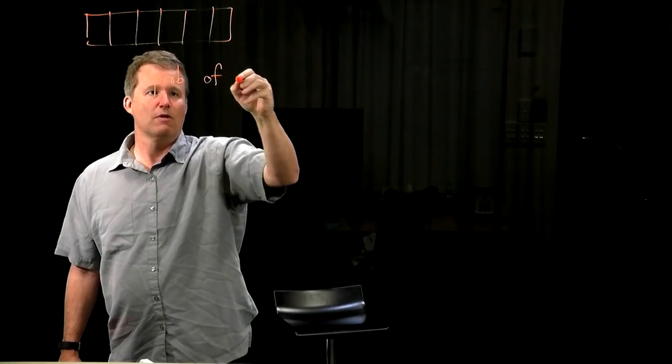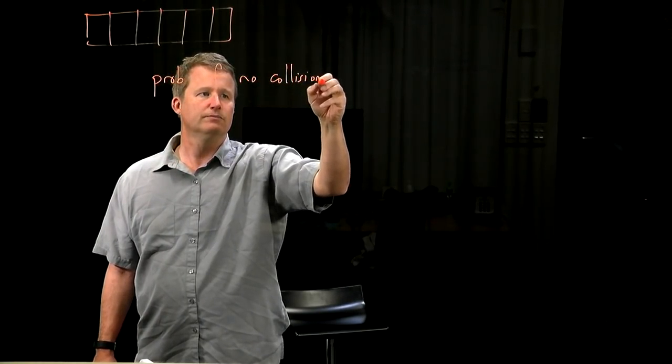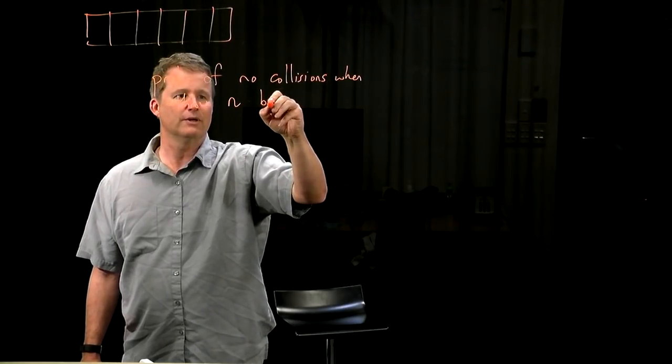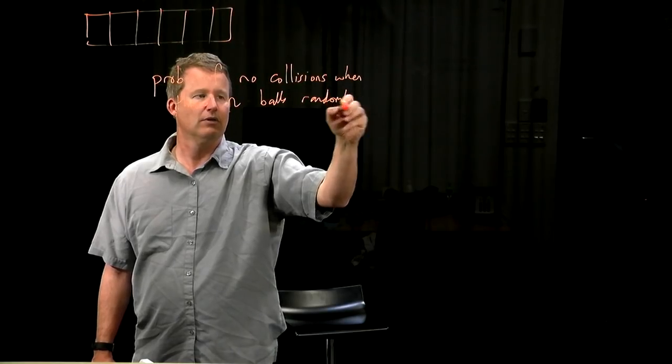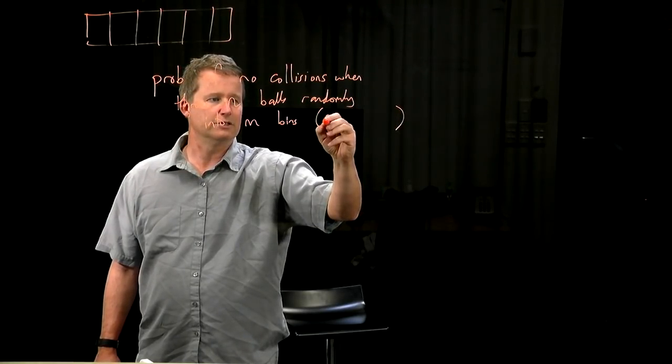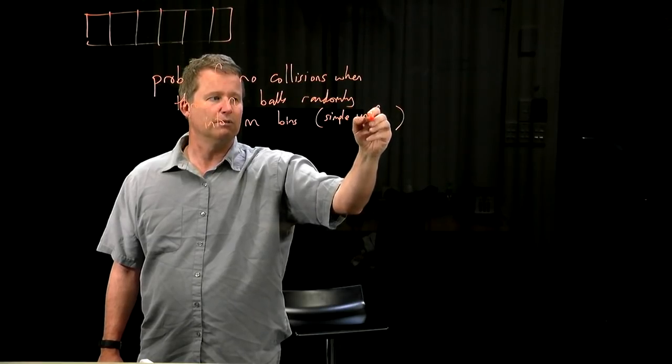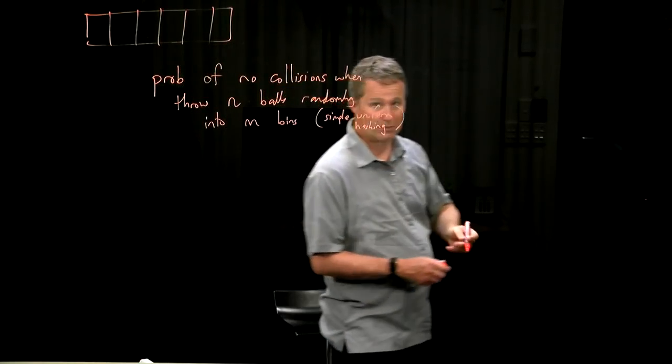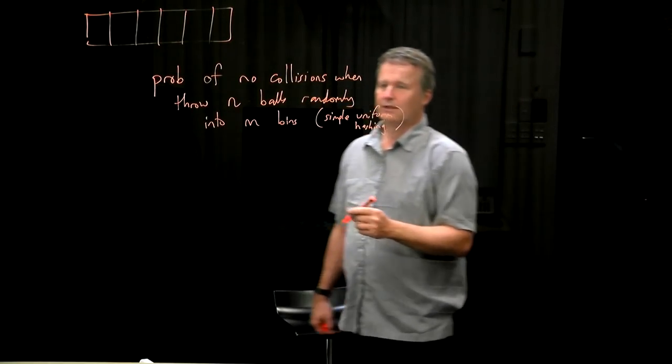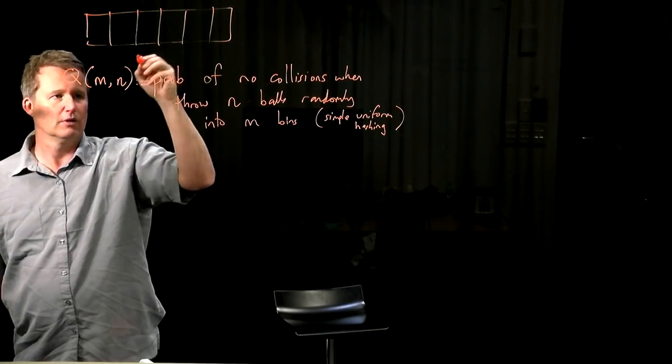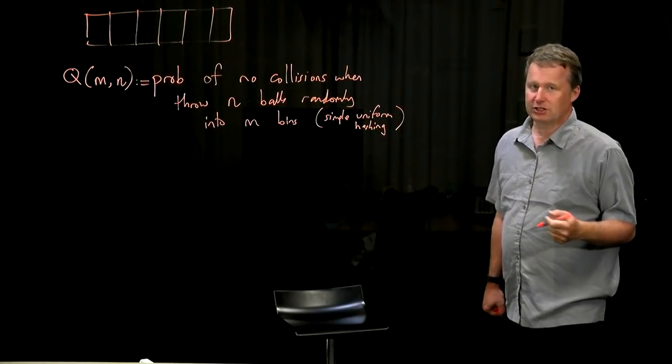I want to look at the probability of no collisions at all when we throw N for November balls randomly into M bins, for example, under the simple uniform hashing model. So it's random, uniform at random for each ball and those balls are independent. That's what that model is saying. I want that and I'm going to give this a name. I'm going to call it Q of M for Mike, N for November. And I want to get some kind of expression for this function.